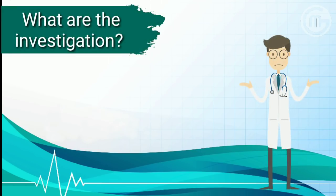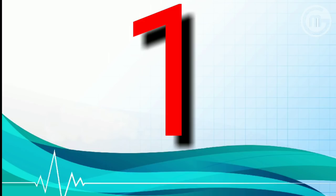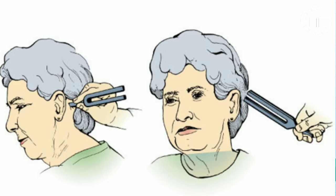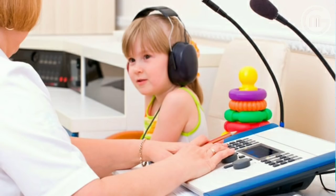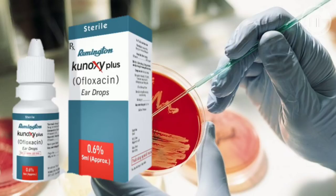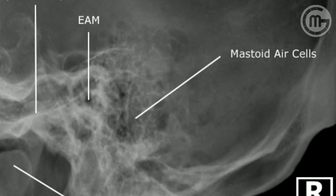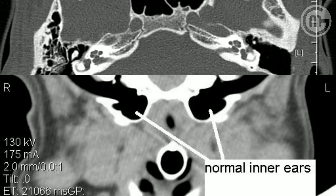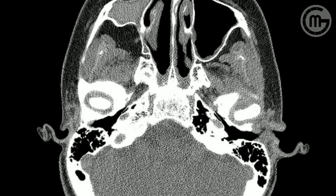What investigations should be prepared? Number one, examination under microscope. Number two, tuning fork test and audiogram — it gives assessment of hearing loss. Number three, culture and sensitivity of ear discharge — it helps to select the proper antibiotic ear drops. Number four, X-ray of mastoids or CT scan of temporal bone to assess the extent of bone destruction in case of atticoantral type of Chronic Suppurative Otitis Media.